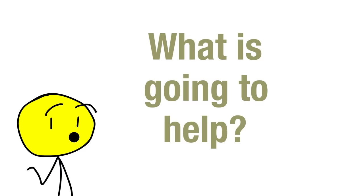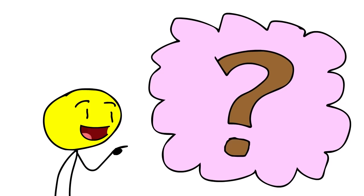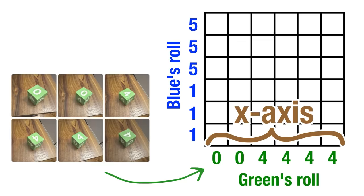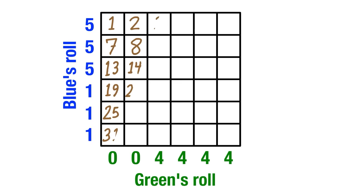What is going to help? Well, let's start by visualizing a two-way match as a 6x6 grid. The green dice's 6 outcomes are on the x-axis, and the blue dice's 6 outcomes are on the y-axis.